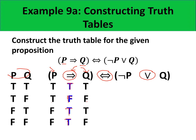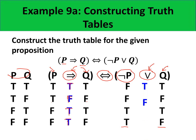For the disjunction, we need to negate the values of P first, then copy the values of Q. We use these two columns to evaluate the disjunction. Recall that for disjunction, if both propositions are false, the disjunction is false; if there is at least one true, then the disjunction is true. So in this case, we get true, false, true, and true.